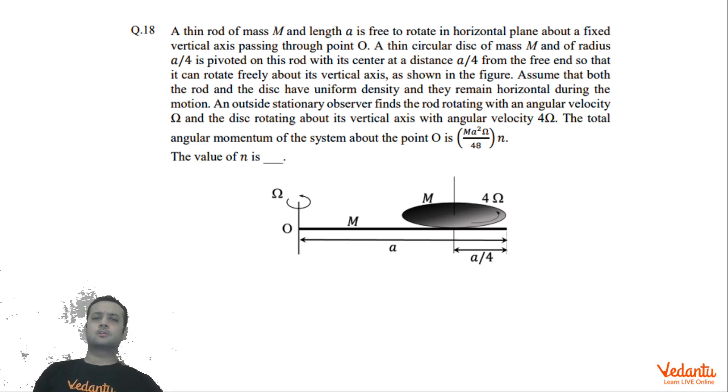The question is not very difficult, although some students would have gotten this wrong because of one particular error. But apart from that, there is nothing difficult in this question. Basically, there is a rod of mass M and length a which is rotating about this fixed axis with constant angular velocity capital Ω.